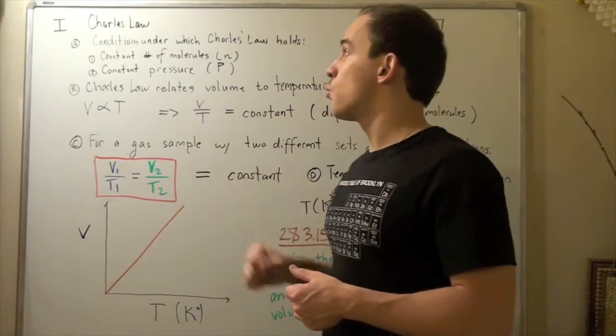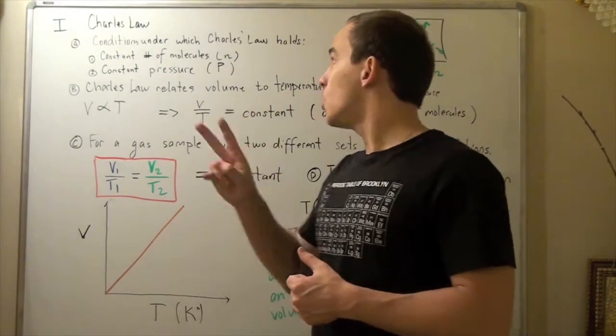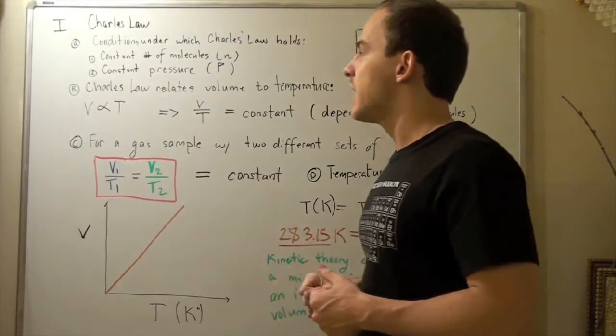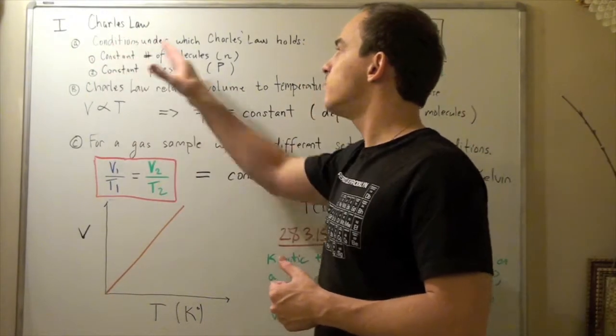For Charles's Law to work, two conditions must hold. We must have constant pressure and we must have constant number of molecules, so our n number of moles stays the same.